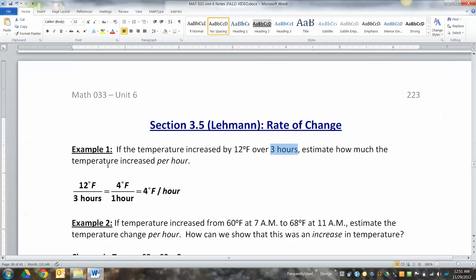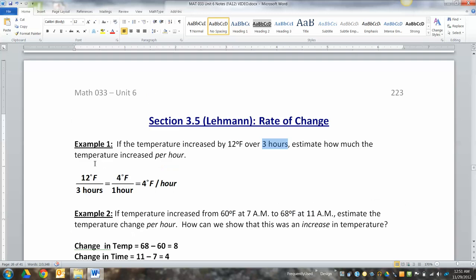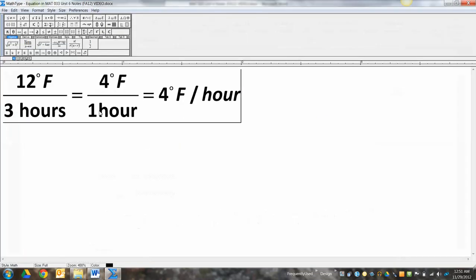And hopefully everybody knows 12 over three makes four. So that's four over one. Right. And then you could write it either four degrees over an hour, one hour like that. Or you could write it like this, four degrees per hour like that. Either way, both say four degrees per hour.